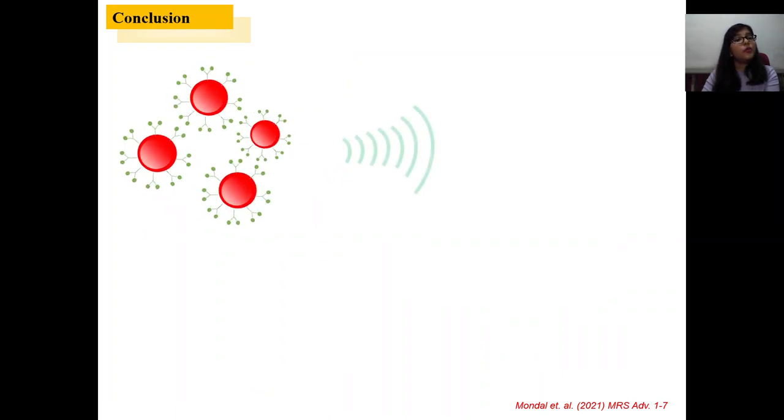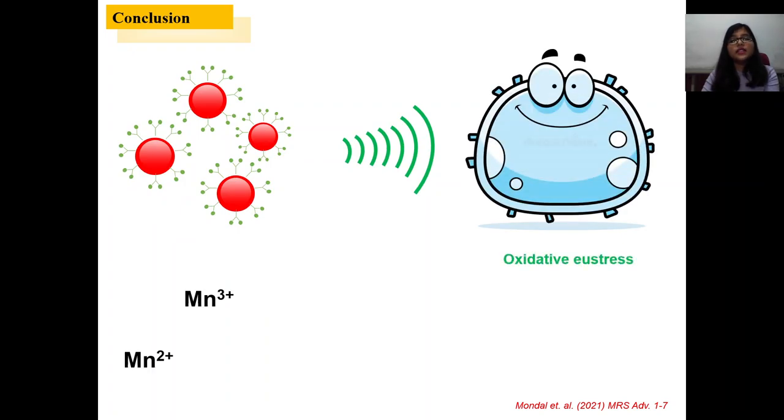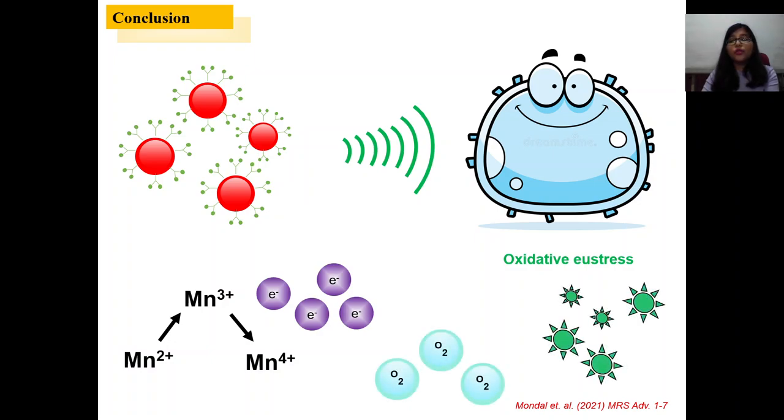So what is the conclusion? We have made a nanoparticle that can sense the oxidative state of the cell. If the cell is in eustress condition, it will undergo this mechanism and produce electrons that will react with the dissolved O2 and produce ROS. This ROS will be neutralized by the reverse reaction.